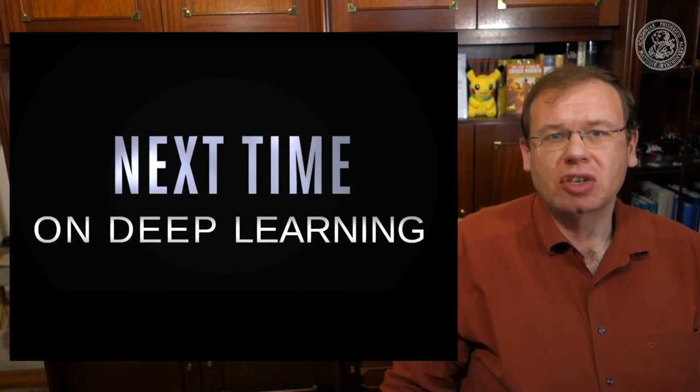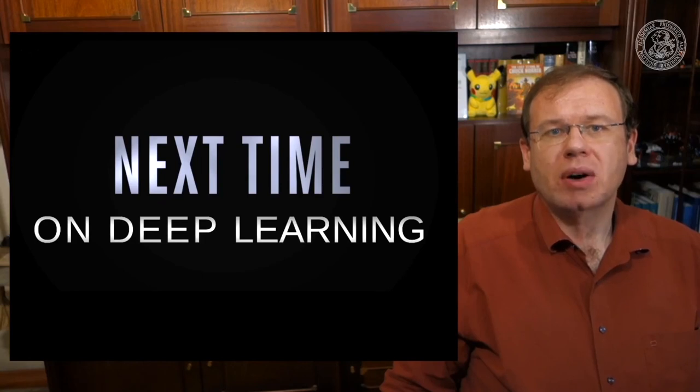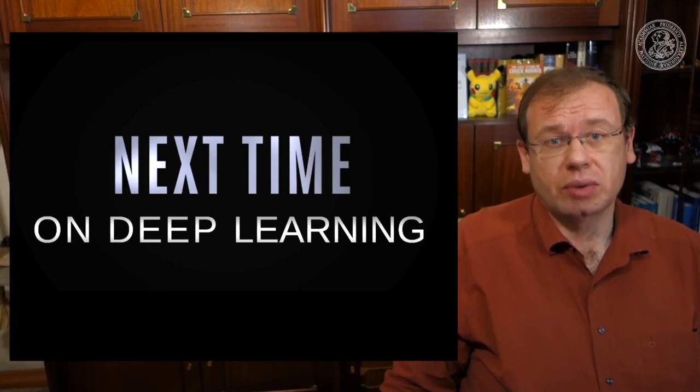Next time in deep learning, we want to go into some more details about loss functions. In particular, we want to highlight the hinge loss. It's a very important loss function because it allows you to embed constraints. We will see that there are also some relations to classical machine learning pattern recognition, in particular the support vector machine. I hope you enjoyed this video, and I'm looking forward to welcoming you in the next one. Bye bye!